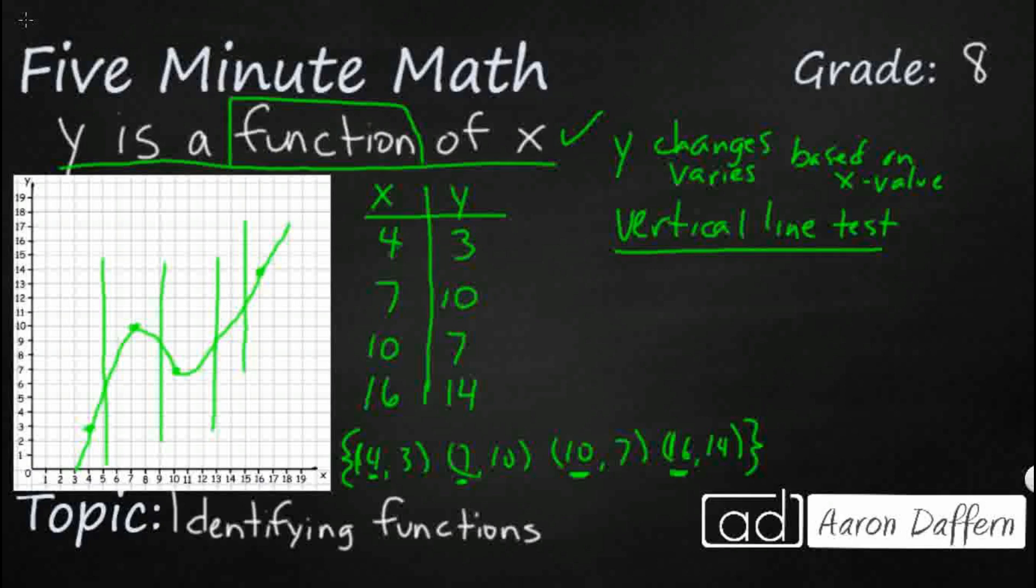You can also do something called mapping to where they'll kind of give you looks like two little circles or ovals right here. This is just another way to visually show x and y coordinates other than this table that we've got right here. So, you might say 4, 7, 10, 16. Maybe you put the y coordinates over here in numerical order, right? And then you just map them. You draw the lines. 4 goes with 3. 7 goes with 10. Doesn't matter if they cross. 10 goes with 7. 16 goes to 14. So, this is an example of y being a function of x.